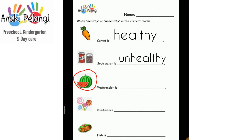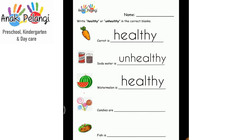This is a watermelon. Watermelon is healthy. Please write the word healthy. These are candies. Candies are unhealthy. Please write the word unhealthy.